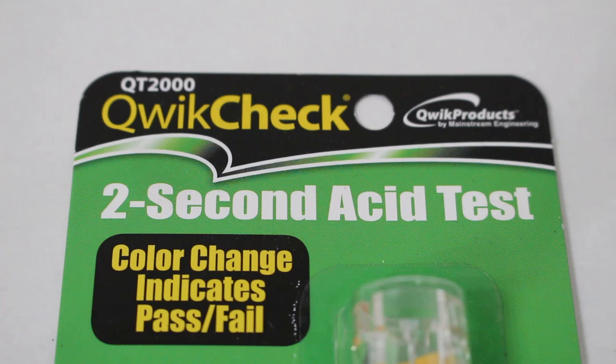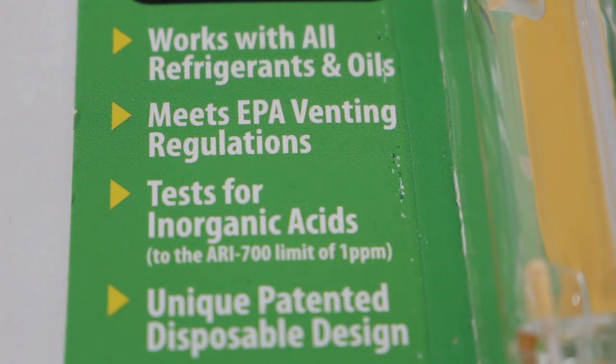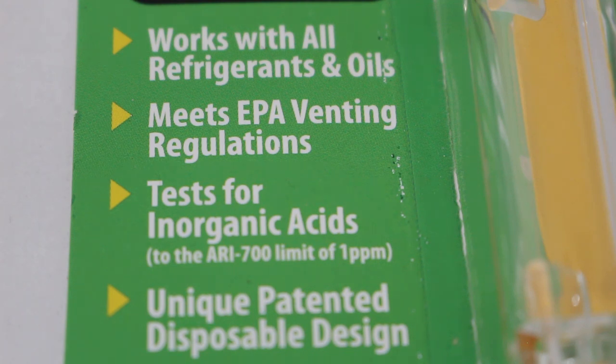This kit is inexpensive and super easy to use. A simple color change indicates if your system passes or fails the acid test. This kit works with all refrigerants and oils, meets the EPA venting regulations, tests for inorganic acids, and has a unique patented disposable design.